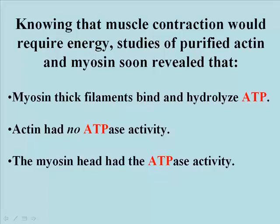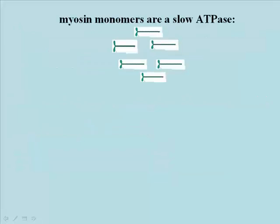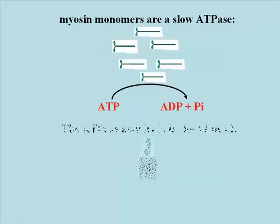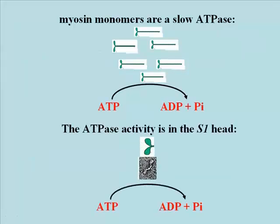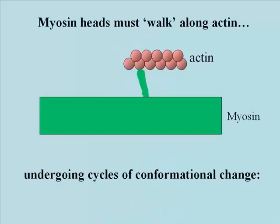The S1 fraction was the only component of myosin that would hydrolyze ATP, and again it was slow hydrolysis. To review then, these myosin monomers are slow ATPases catalyzing ATP hydrolysis. If you do this experiment with the tail, you don't get any activity.